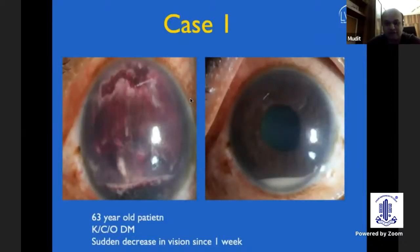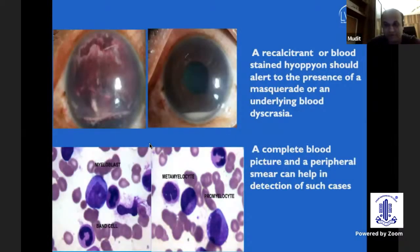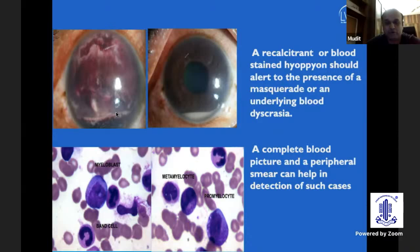This was a 63-year-old patient who was a known case of diabetes, who came with a sudden decrease of vision in both eyes. The left eye had a hypopion inferiorly, and the right eye had an entire blood coagulum and a blood-stained hypopion. We did an AC tap and a peripheral smear, which revealed the presence of myeloblasts, metamyelocytes, promyelocytes, and band cells. This was a patient of chronic myeloid leukemia, and the blood-stained hypopion was a clue to an underlying malignancy.